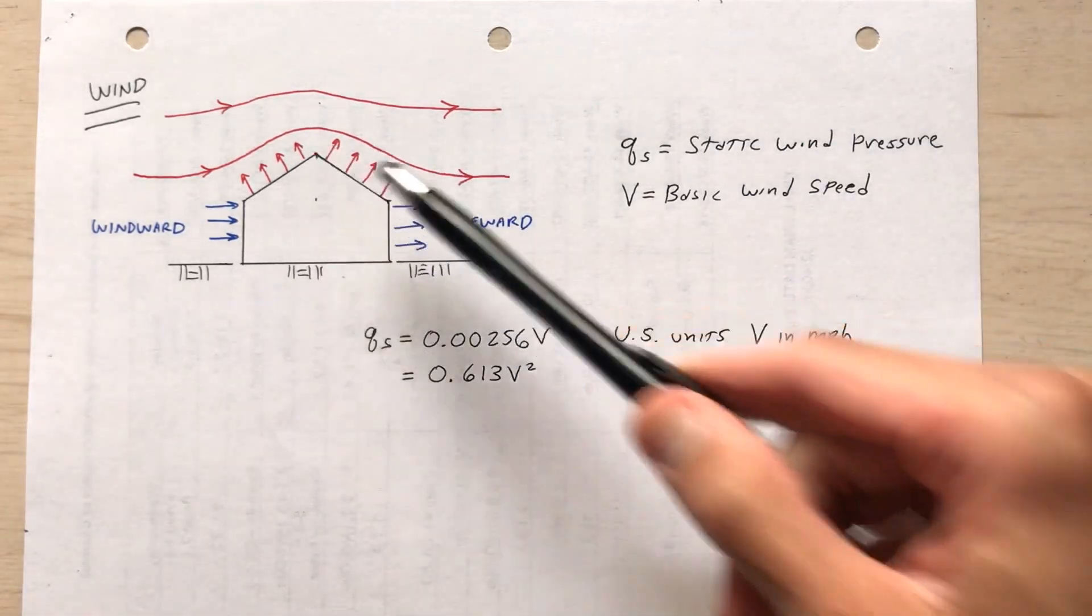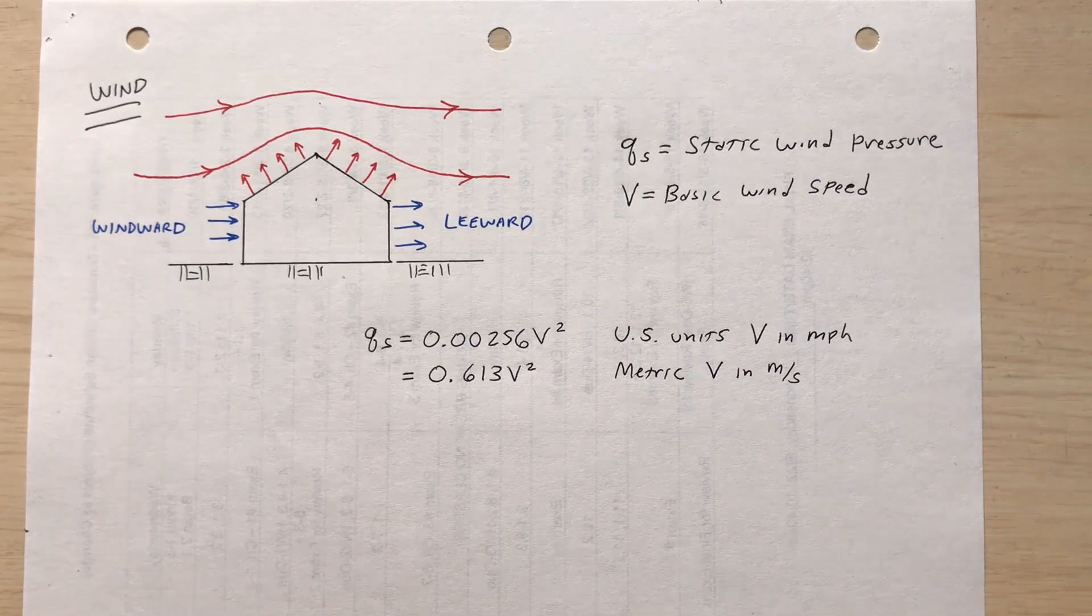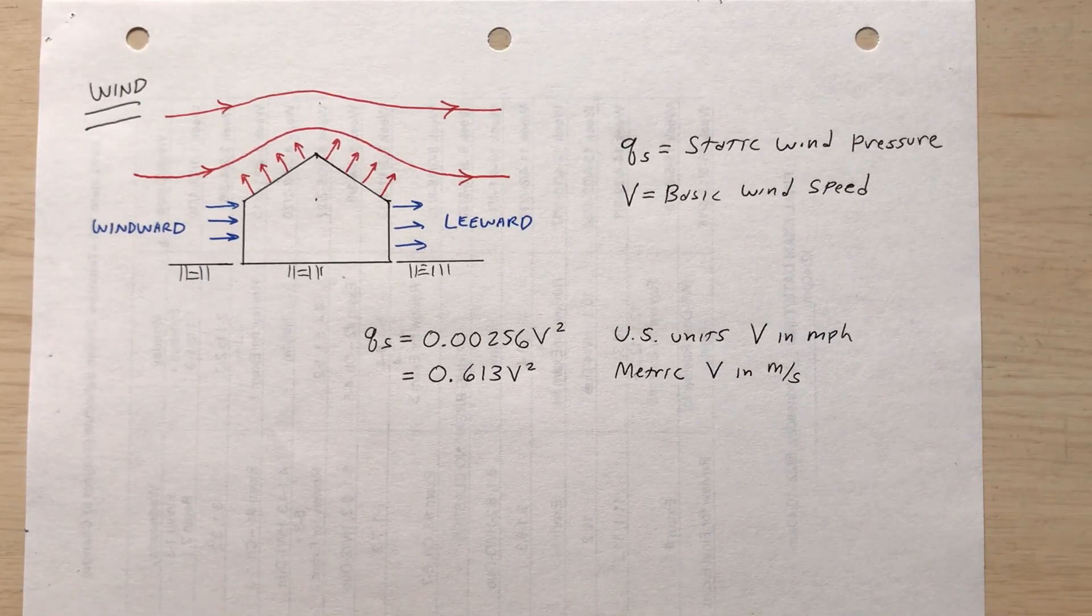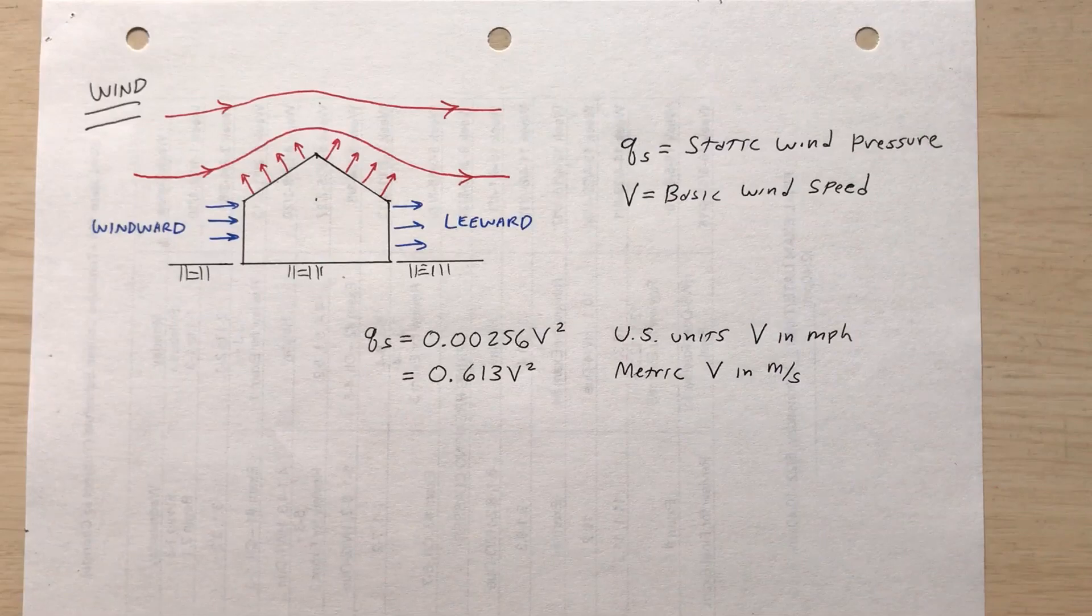There's also going to be an uplift force on the roof, as you can see there. We've got something called the static wind pressure Q sub s, which is based on the basic wind speed.